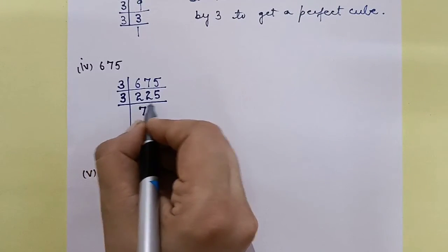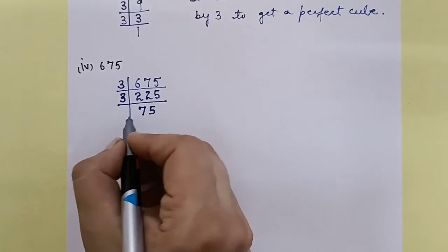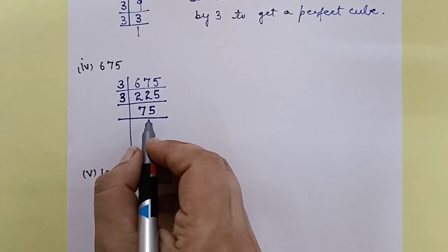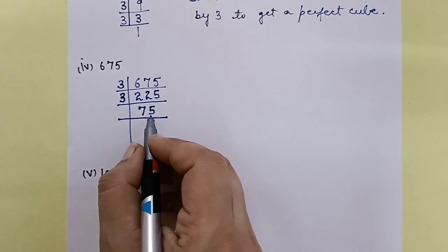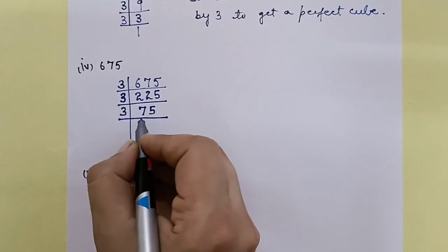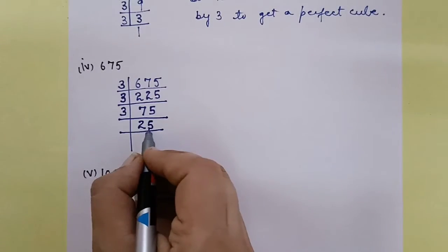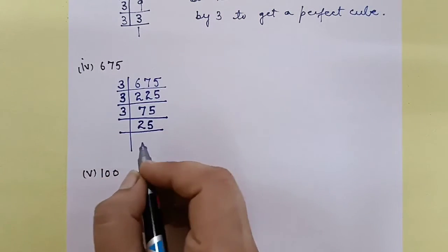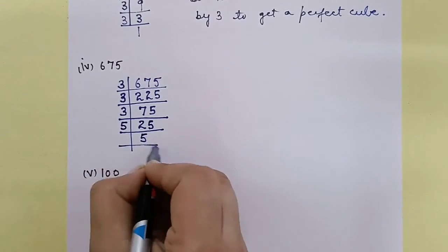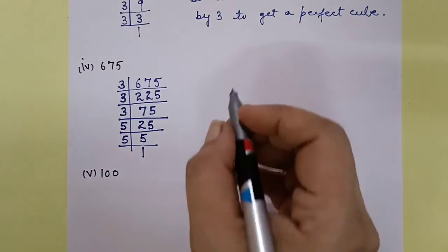Now check: 2 + 5 is 7, which doesn't go in the table of 3. So now it goes in the table of 5. 25 ÷ 5 = 5, ÷ 5 = 1. Now let's write the prime factorization of 675: we have three 3s and two 5s. Making groups of 3: three 3s form one complete group. But we only have two 5s, so we are short by one 5.